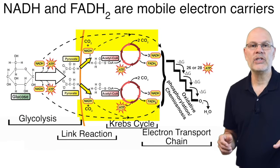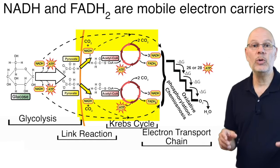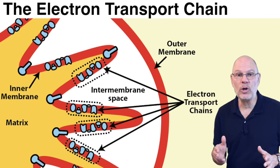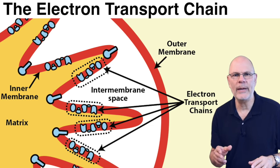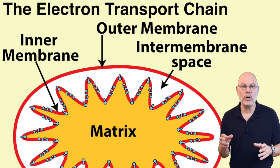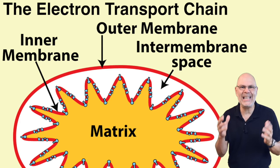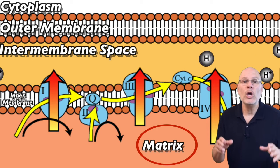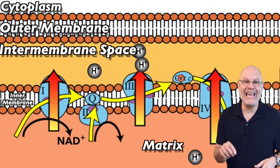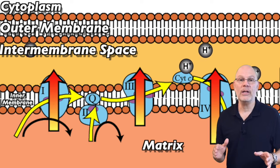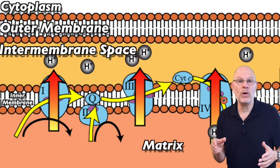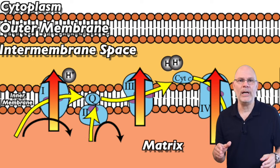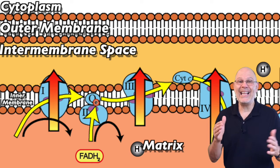NADH and FADH2 feed into the electron transport chain. The chain is a series of enzymes embedded in the inner mitochondrial membrane organized in a linear array. There are thousands of these arrays along the inner mitochondrial membrane — that's partly why that inner membrane is so intensely folded. Here's the matrix. You can see the reduced electron carriers, NADH and FADH2, dropping off their electrons. These electrons flow along the electron transport chain, represented by the yellow arrow, which is built into the mitochondrial inner membrane. This electron energy is essentially an electrical current.